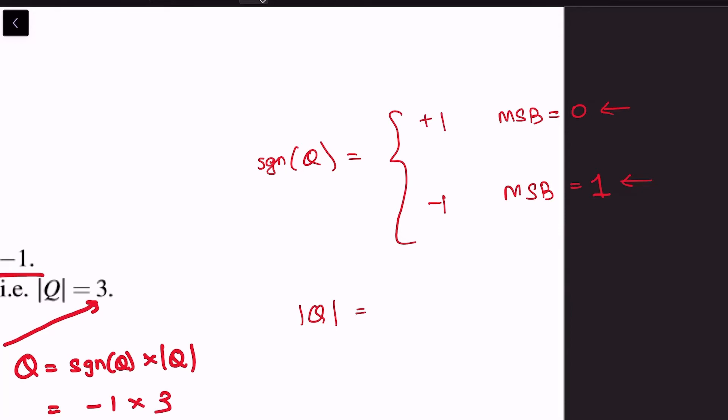And the magnitude of Q is obtained by taking the binary to decimal conversion of the bits of Q if MSB is equal to 0, and the binary to decimal conversion of the bitwise complemented bits of Q if MSB is equal to 1.